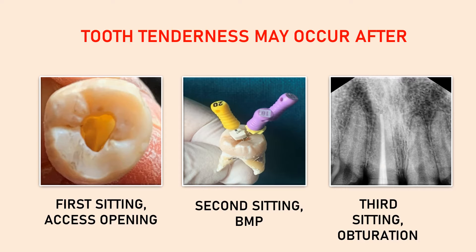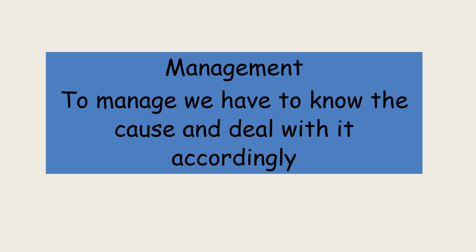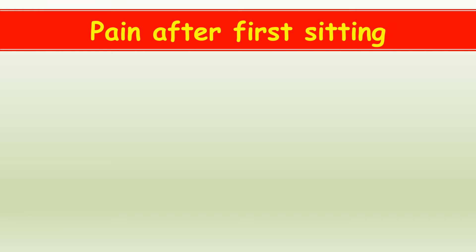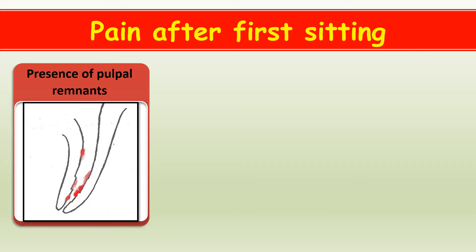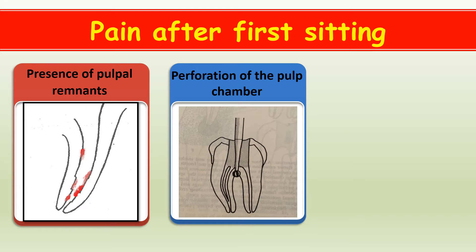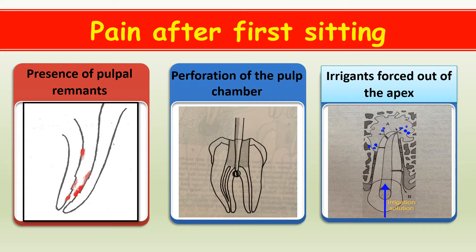Now how do we deal with it? To manage this situation, we have to know the cause of pain and then deal with it accordingly. If your access cavity had been properly prepared, then the most common cause of pain can be the presence of pulpal remnant in the canals. The next common cause is perforation of the pulp chamber which happened during access cavity preparation and you didn't come to know. Or it could also be because of debris which got forced out of the apex. Now let's deal with each one individually.